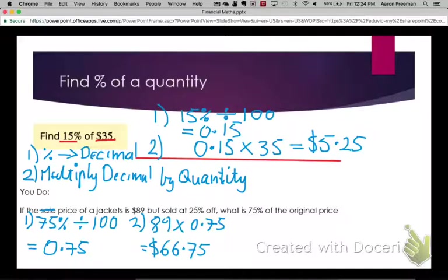Another way to do that would be to find 25% of the jacket. So multiply $89 by 0.25 and that will tell you how much discount is received on the jacket. And then with that, you can subtract that from your $89.